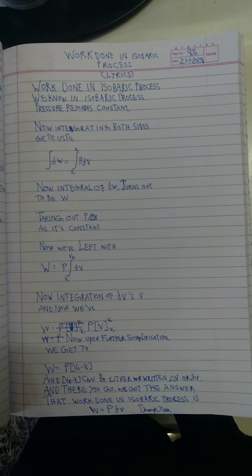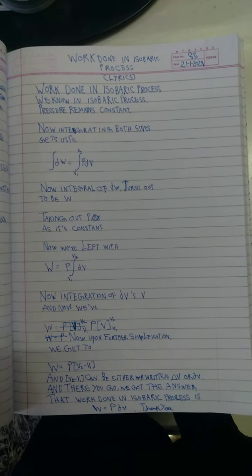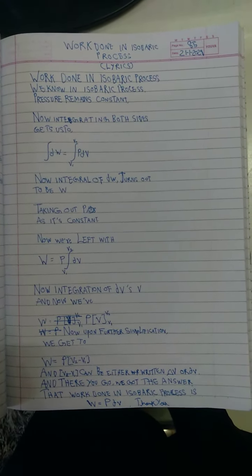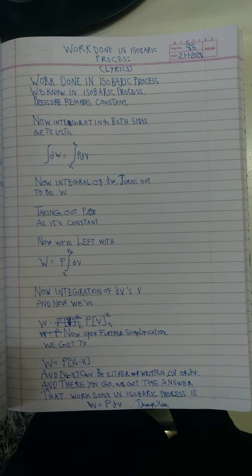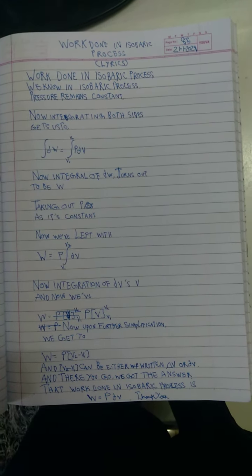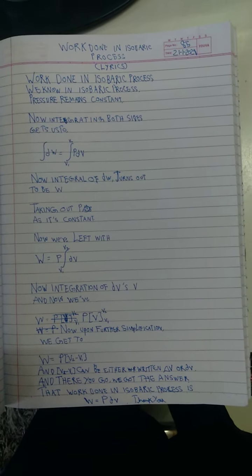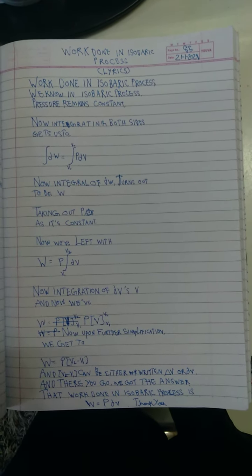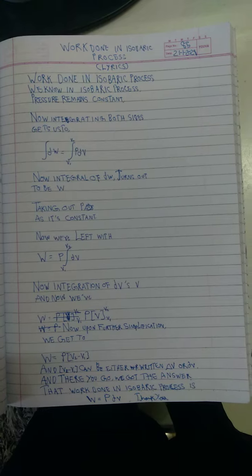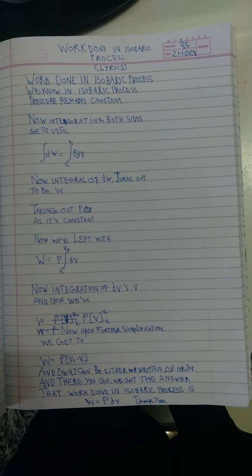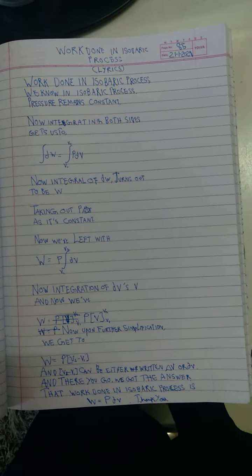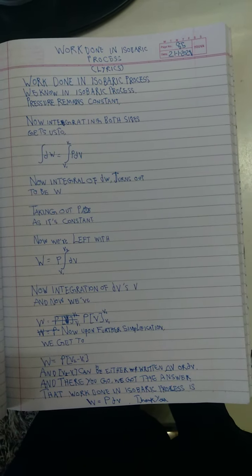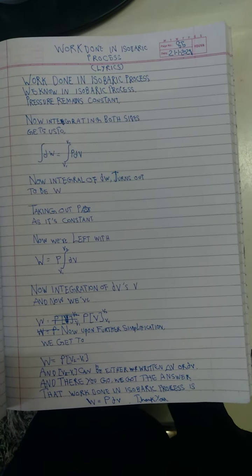Now integral of dw turns out to be w. Taking out p as it's constant, we are left with w equal to p times the integration of dv with limits from v1 to v2. Now integration of dv is v, and we have w equal p times v with limits from v1 to v2.